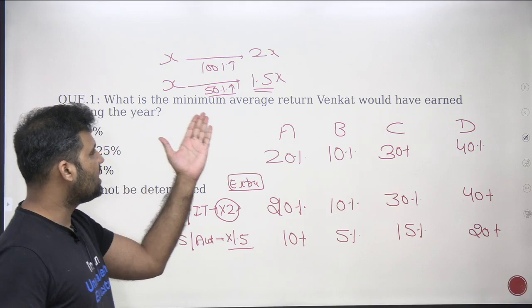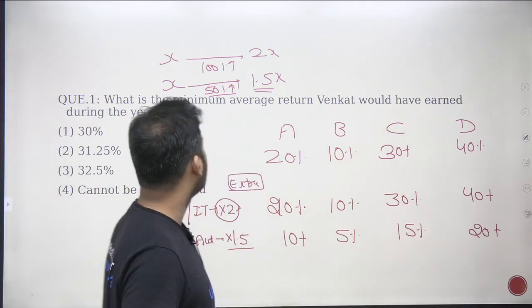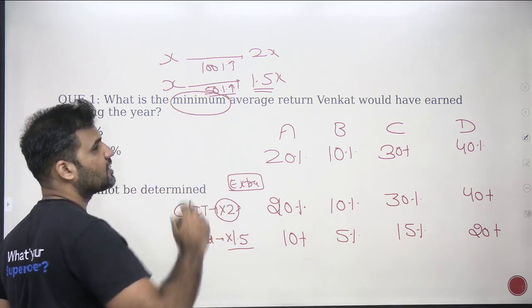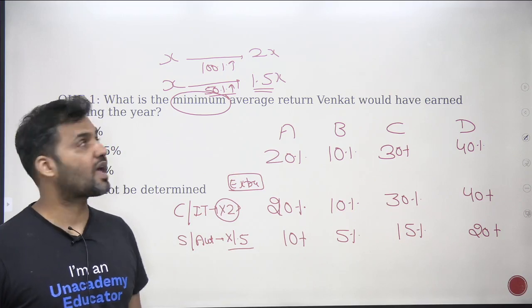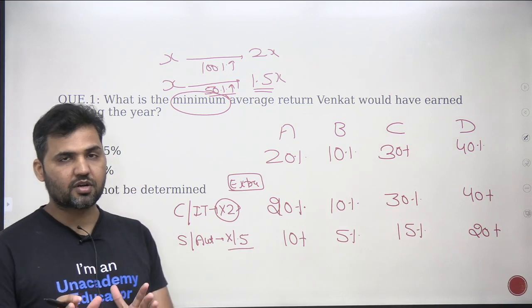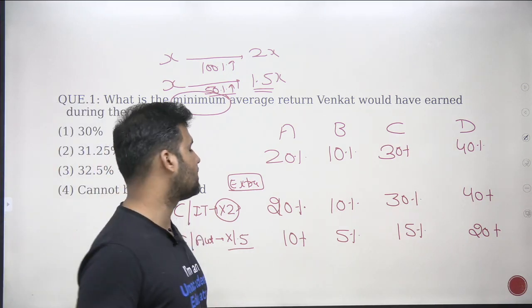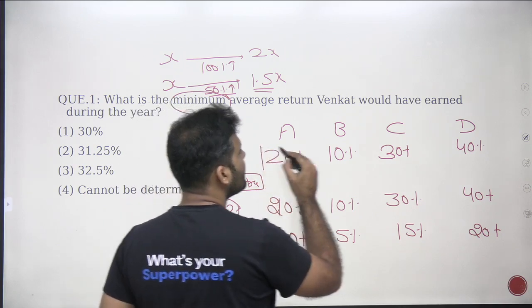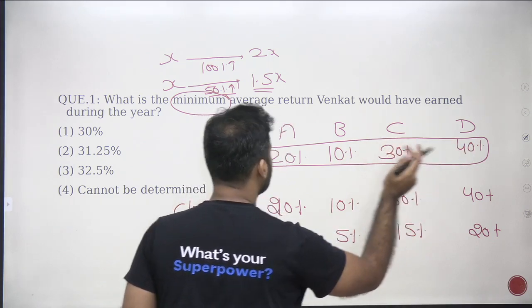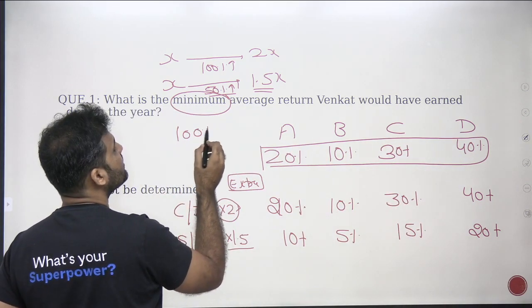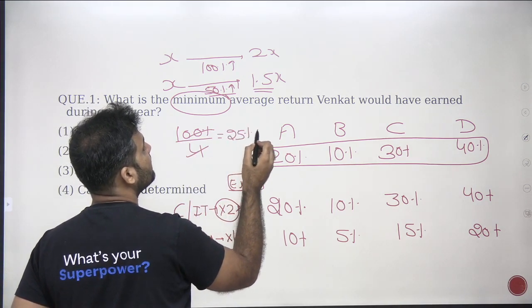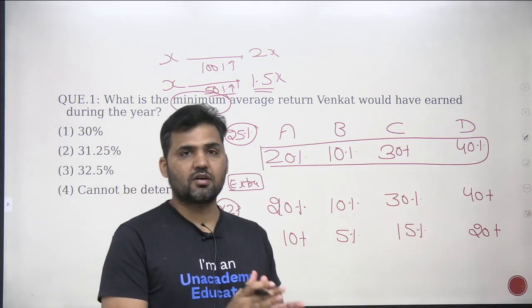The first question is: what is the minimum average return Venket would have earned during the year? If none of the companies is performing extraordinarily good results — none is giving you more than the expected return — the average return would be (20 + 10 + 30 + 40) / 4 = 100 / 4 = 25%. That's the case when none of the companies is giving you an extraordinary good result.